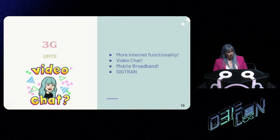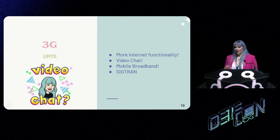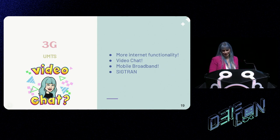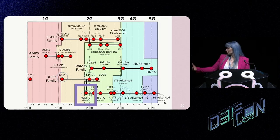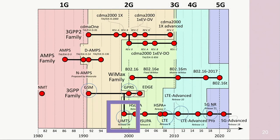Let's talk about 3G. We start getting things like video chat, a new signaling method, and much more internet functionality. Visually, our UMTS implementation is around the same time as GPRS, so they're a little bit in tandem. None of these actual generations are standalone — all of these things are being used mostly at the same time and all are still relevant.